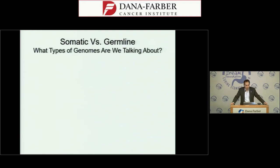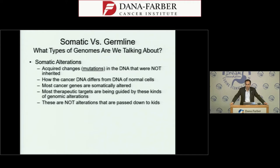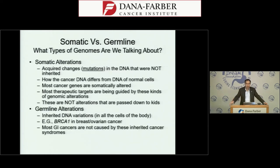When thinking about cancer genomes, we work in two big categories: somatic and germline. Somatic mutations are the main focus — these are changes in cancer cells that differ from the rest of the body's cells and were not inherited. Most cancer genes and targeted therapies relate to these alterations, and importantly, they are not passed on to children. In contrast, germline alterations like BRCA1 or CDH1 are inherited, present in all cells of the body, and are involved in cancer risk, though most patients' cancers are not caused by these.